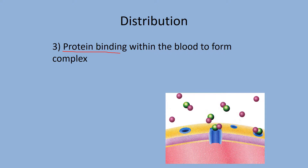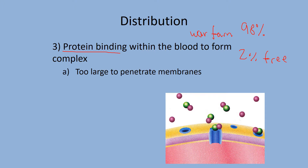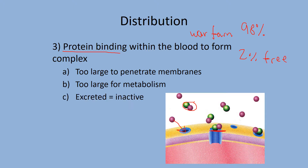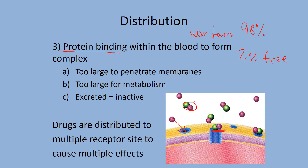Protein binding: blood contains many blood proteins, some of which bind drugs. For example, warfarin is approximately 98% bound to protein, leaving only about 2% free to interact with receptors. Think of it like wrapping tape around a key — the drug-protein complex is too large to enter a pore, so only free drug can interact. The bound drug is essentially inactivated and eventually excreted.